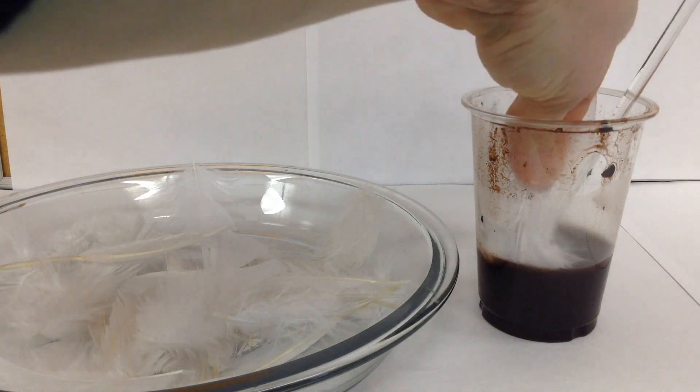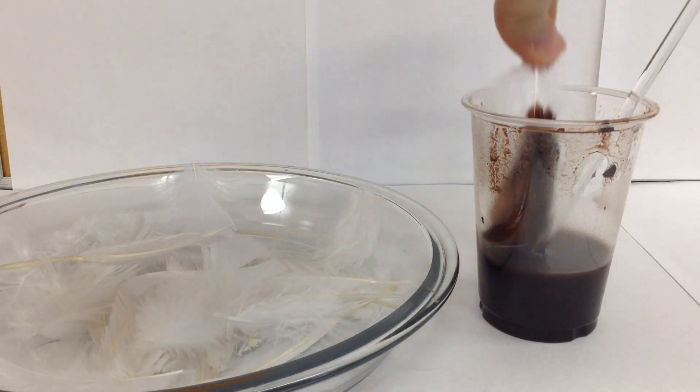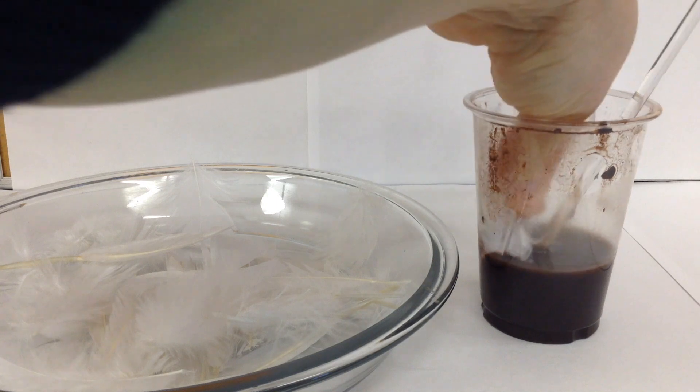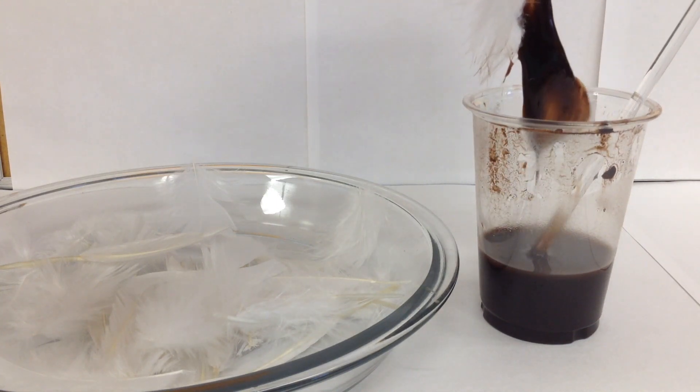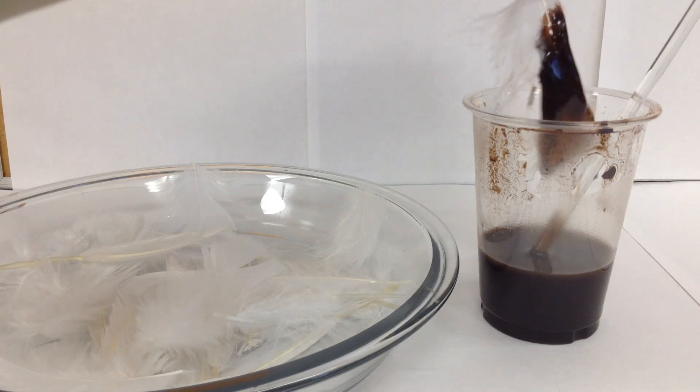When we dip them in, you can see our feathers get all gunked up and the oil makes all the fluffy insulating value leave the feathers.